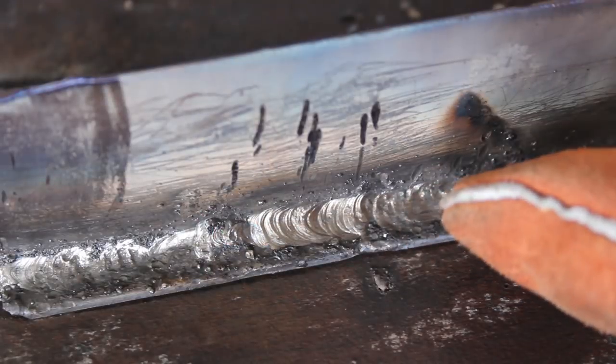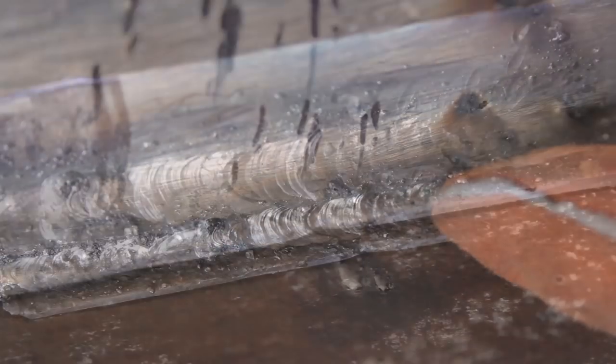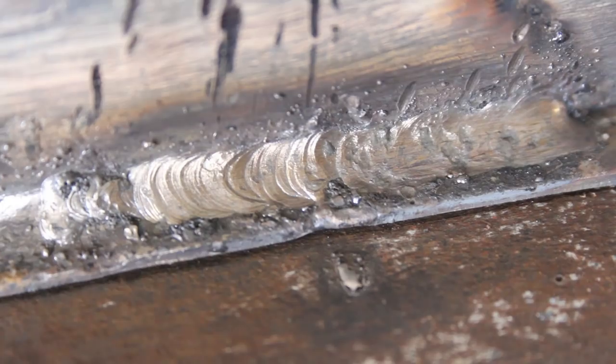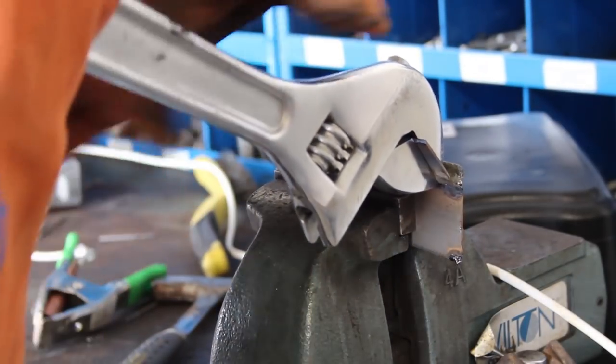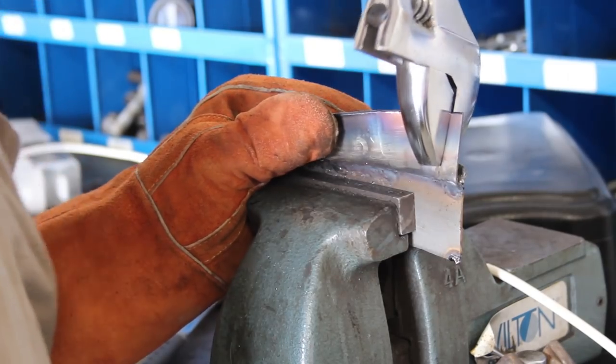He tried some welds on pieces of his own scrap steel and seemed pretty impressed with the results. He said the weld penetrated the metal completely and probably wouldn't break. So we tried some more destructive testing to break the weld. But even with good leverage and quite a bit of force, the weld held strong, and the metal broke first.